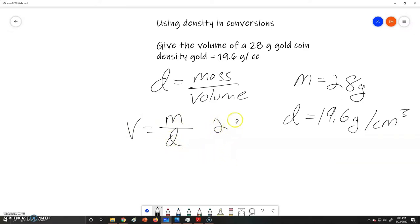We can do 28 grams divided by 19.6 grams per cubic centimeter. The grams will cancel and once we divide this and plug it into our calculator we get 1.4 cubic centimeters as our answer.